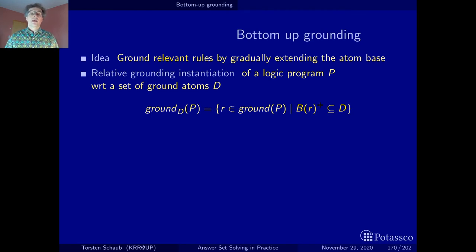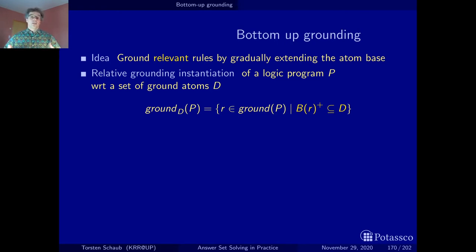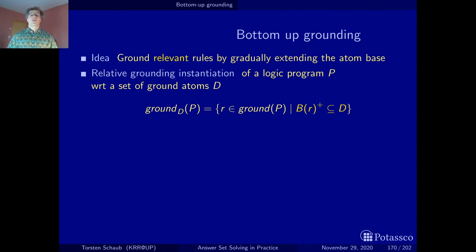Our bottom-up grounding algorithm can be seen as an iteration on the relative ground instantiation. We start with an atom base consisting of the facts — more precisely the heads of the facts — then compute the relative ground instantiation with respect to the facts. Normally we obtain new rules, and we take their heads, because they can be used for further grounding, add them to the atom base, and continue until we cannot extend the atom base anymore. Then we output the relative ground instantiation with respect to this final atom base.